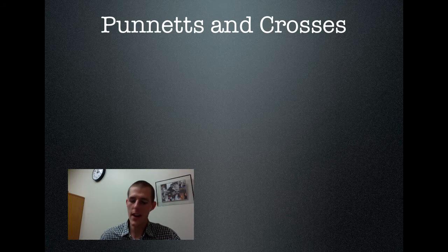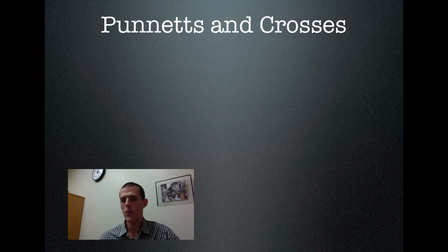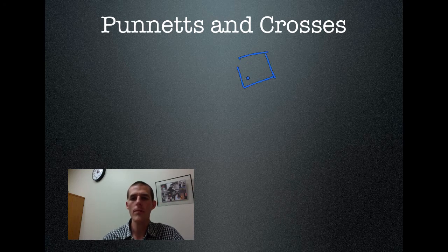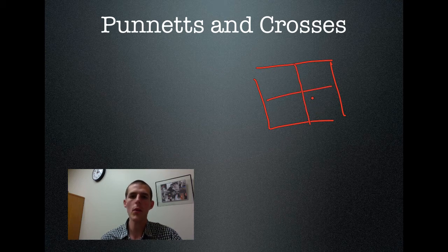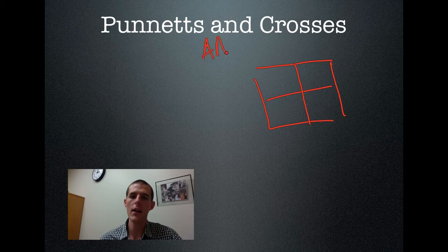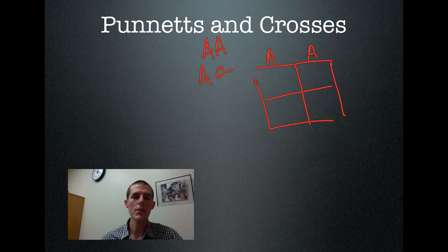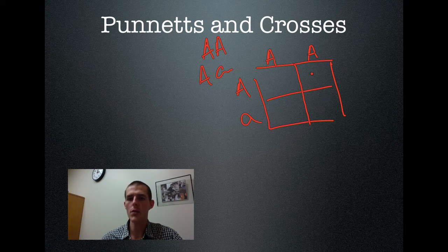Now let's talk about Punnett squares and test crosses. I'm sure you're all familiar with Punnett squares, but I want to do a quick refresher. A Punnett square is a grid that helps you determine inheritance. When you set up your Punnett square, each letter represents one gamete — a sperm or an egg. So let's say dad has a genotype of big A big A. When he makes sperm, all of those sperm will have that big A. Let's say mom is big A little a. When she makes eggs, half of the eggs will have a big A and half will have a little a. These squares represent all of the potential combinations.